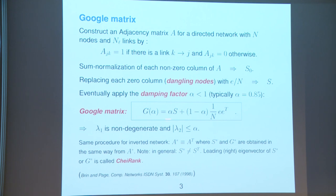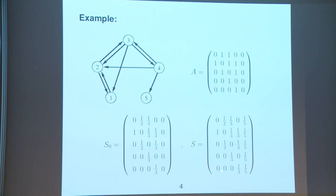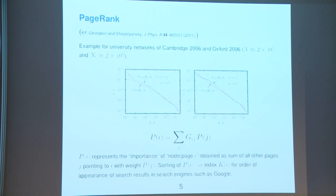Here is a simple example of a directed network with five nodes. The adjacency matrix encodes links from a column index to a row index — for example, from column 1 to row 2. We normalize all non-empty columns, yielding fractions like 1/2 or 1/3. The last column is empty — it's a dangling node — so we insert 1/5 entries. Network size is 5, giving the matrix S.